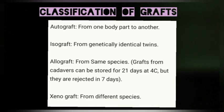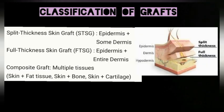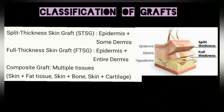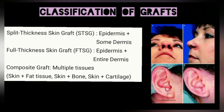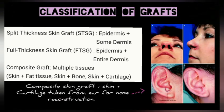A xenograft is taken from a different species. On the basis of depth, grafts are divided into split thickness graft (STSG), full thickness graft (FTSG), and composite graft. STSG is used when the skin loss involves epidermis and some part of dermis. FTSG is used when the entire dermis is lost along with epidermis. A composite skin graft, involving multiple tissues, is used when other tissues such as cartilage, bone, or fat are also lost.